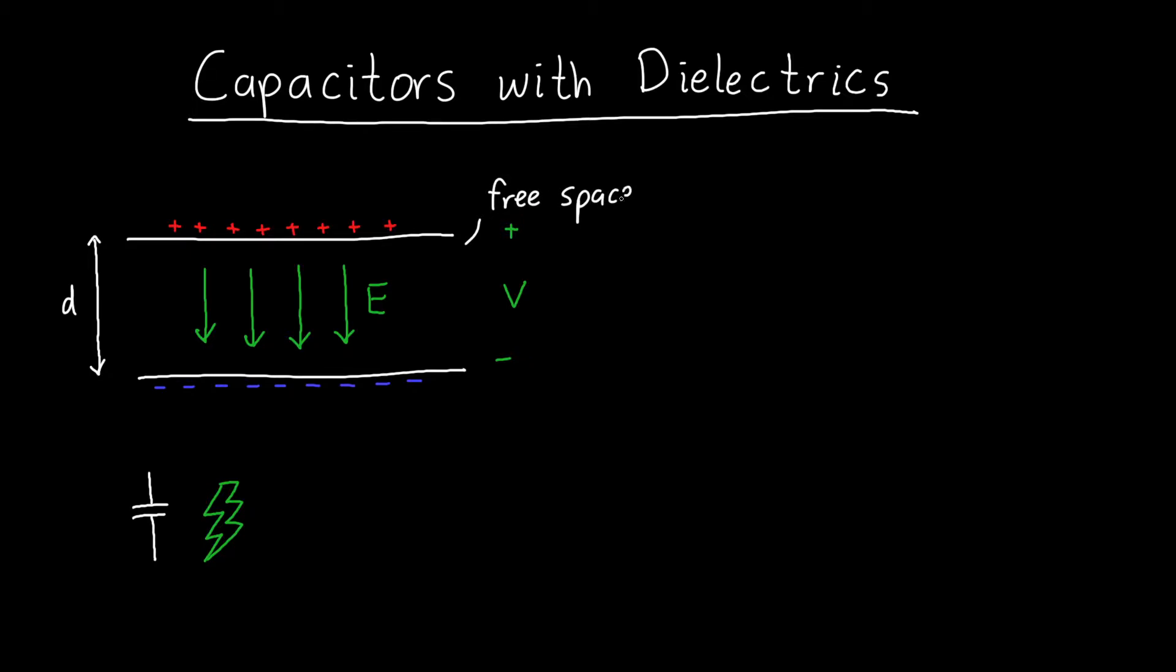We've had a charge of plus Q on the top, a charge of minus Q on the bottom, and that creates an electric field and a voltage between those two plates, but we've always had free space in between them.